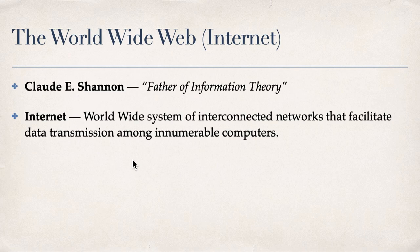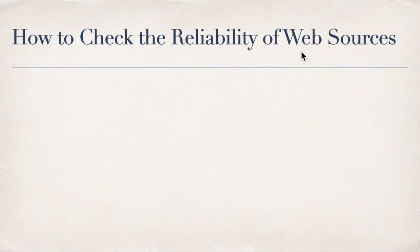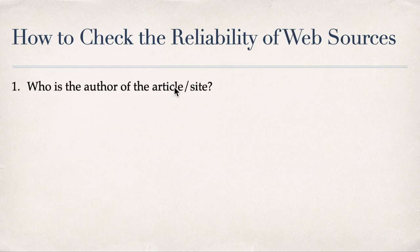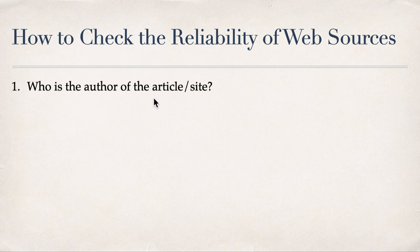We've all searched things in search engines and Googled a lot, but how can you check the reliability of web sources? Here is a brief guide. Number one: check who the author is. Is the author competent enough to write that kind of information or article? You need to dig into who the author is — for example, I am a university instructor.